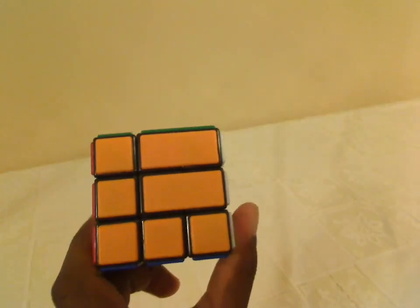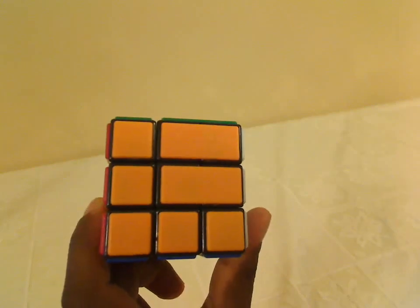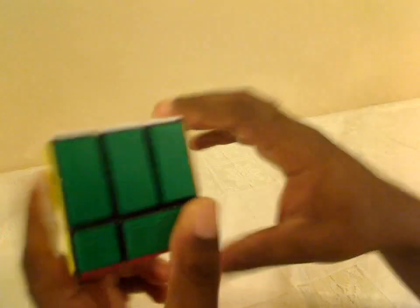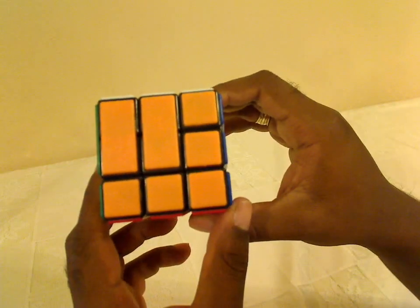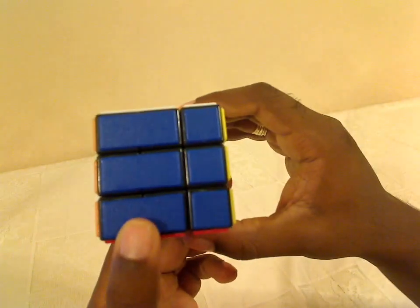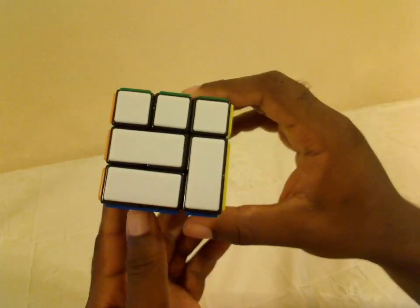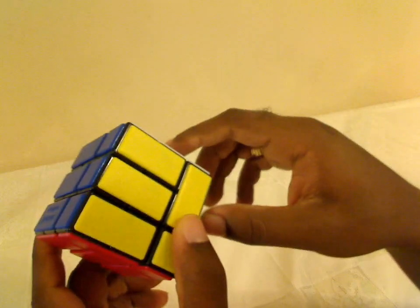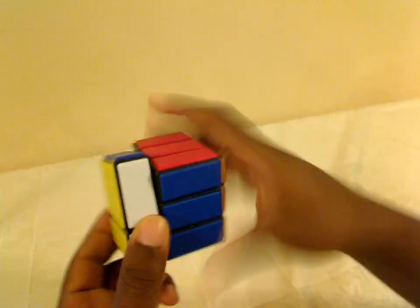This puzzle used to be offered by Meffert's a long time ago, and he recently re-released it with tiles. Before I sign off, let me show the colors: there is yellow, green, orange, blue, white, and on the opposite side, red. Again, each side has that 'Meffert's Challenge' on it, and the turning is really great.